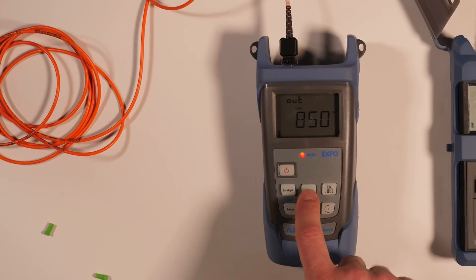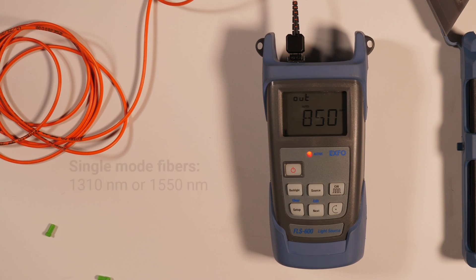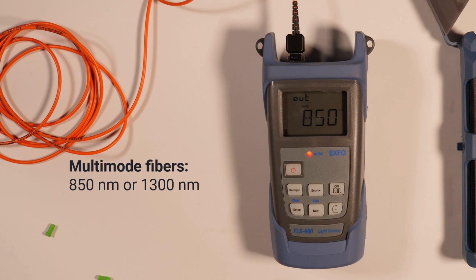Then select the appropriate wavelength for your measurement. Common wavelengths for single-mode fibers are 1,310 nanometers and 1,550 nanometers, while multi-mode fibers often use 850 or 1,300 nanometers.